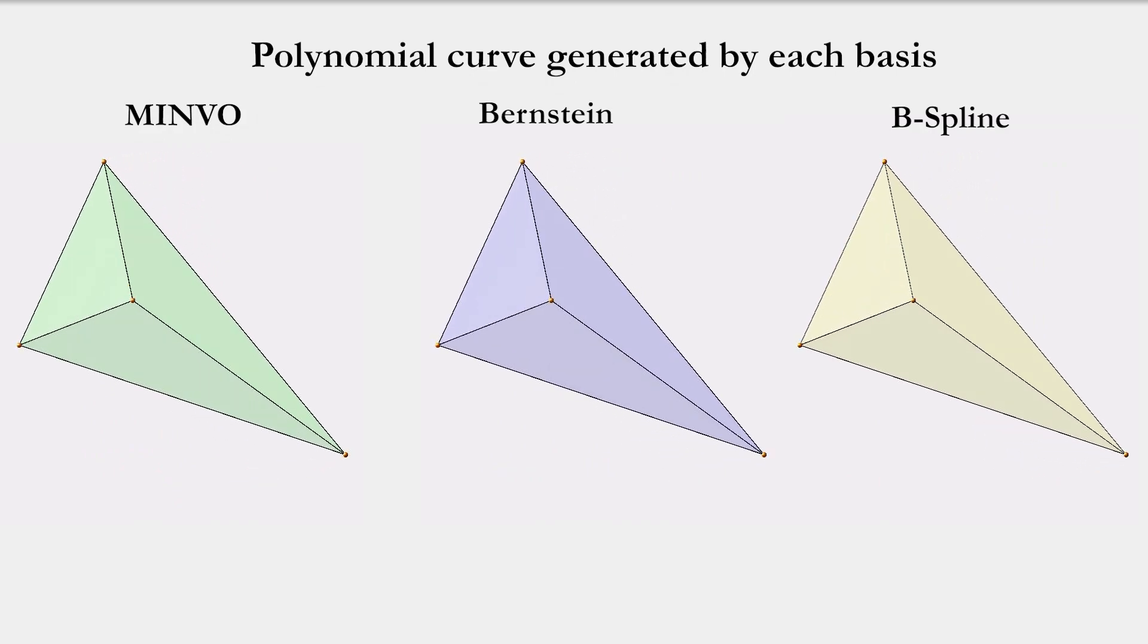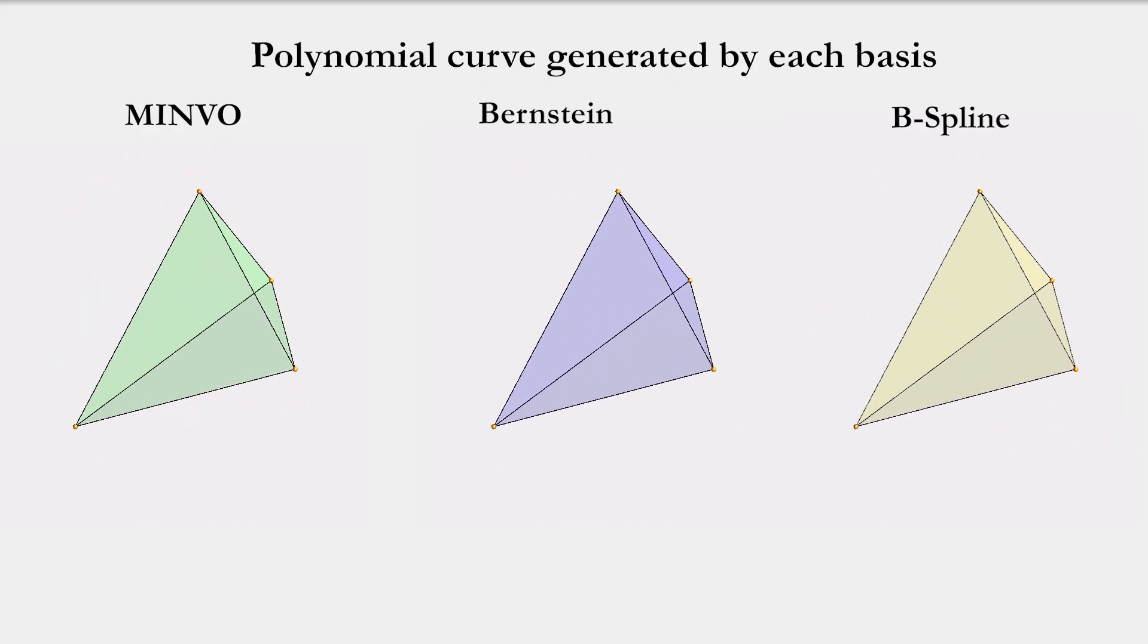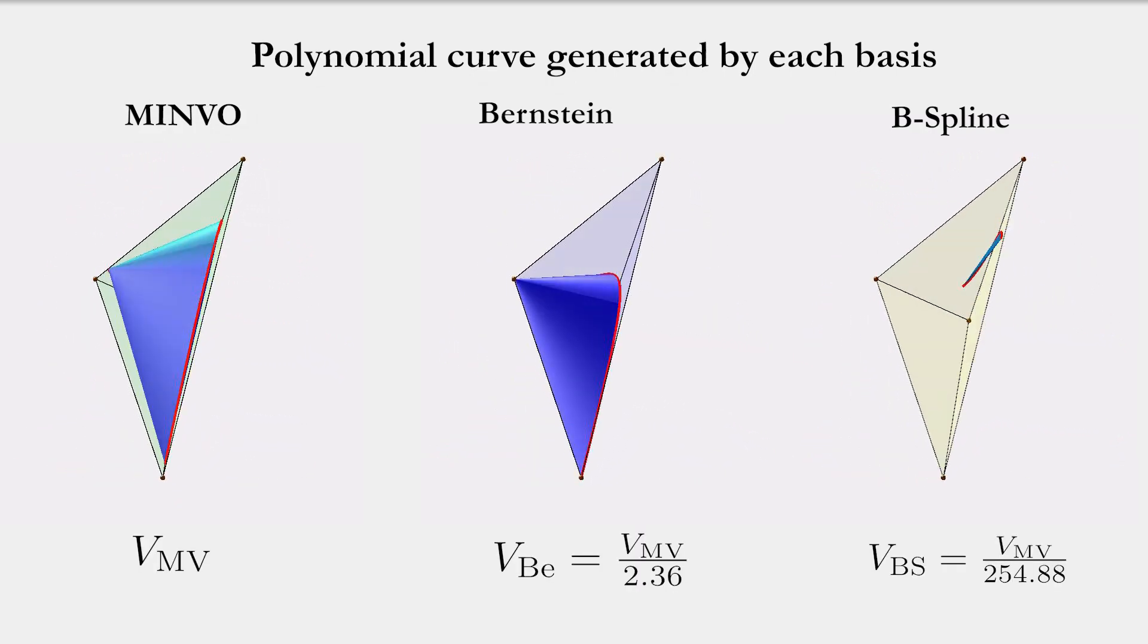Similarly, for this given simplex, the Minvo basis obtains polynomial curves with the largest convex hull.